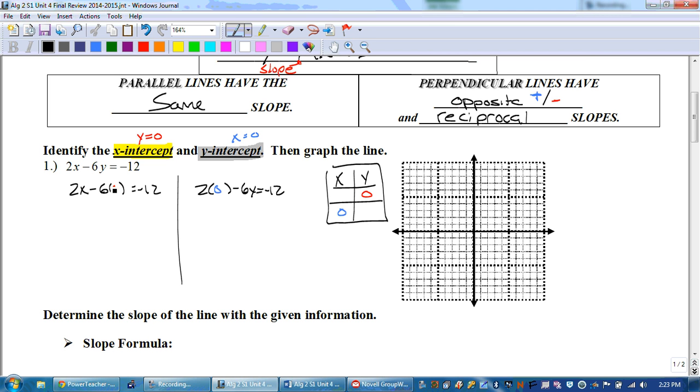So, 2x times 6, well, 6 times 0, that's 0. So, we have 2x equaling negative 12. To get the x by itself, we divide by 2, and we get x equals negative 6. And remember, that's the point, negative 6, 0. And now we're going to do the same thing on the other side. 2 times 0, those cancel out. And we're left with negative 6y equals negative 12. To solve for y, we need to divide both sides by negative 6. And we get that y equals 2. And remember that that's the point, 0, 2.